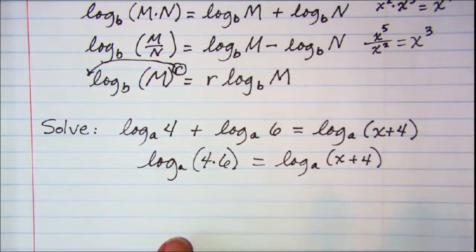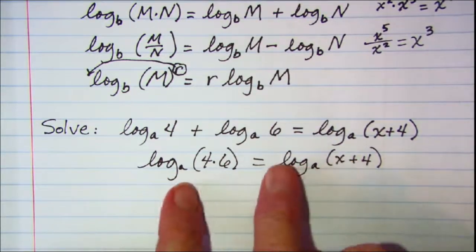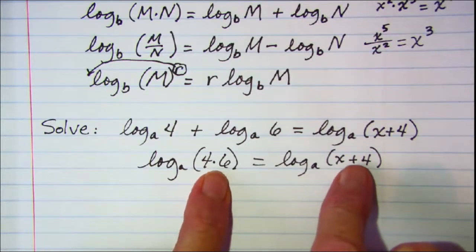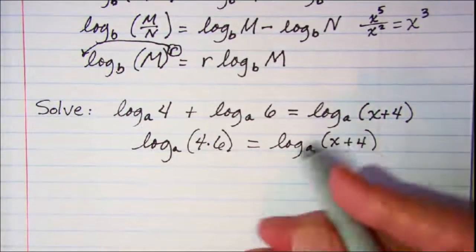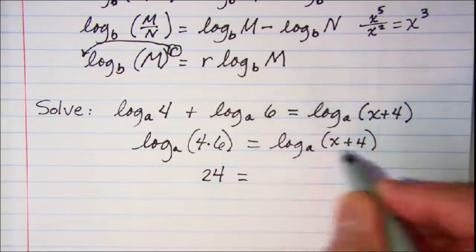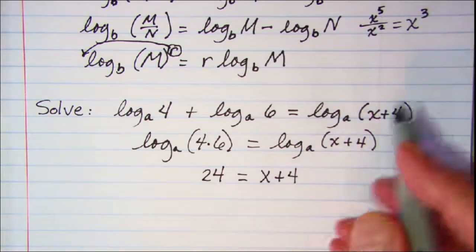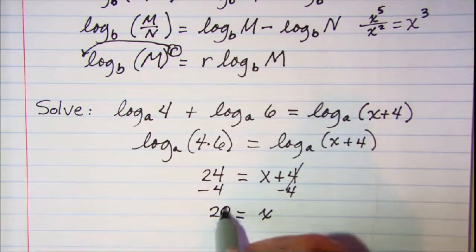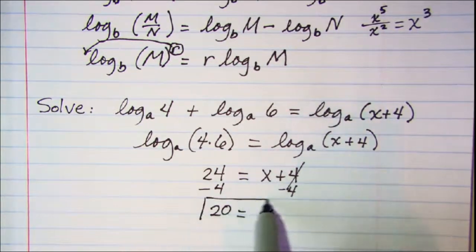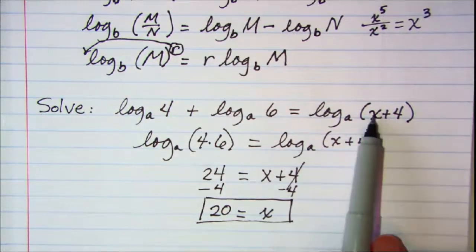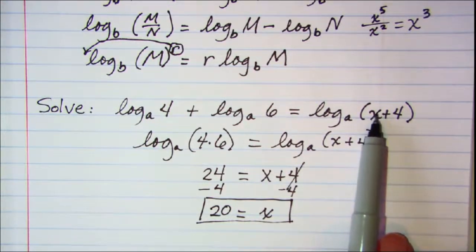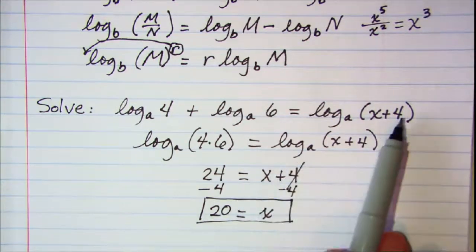Whenever you have an equation where both sides have the same log base — here both are base a — you can set the arguments equal to each other. So 4 times 6, which is 24, equals x plus 4. Subtract 4 from both sides and x is equal to 20. It's important to check that the argument won't be negative or zero; here 20 plus 4 is 24, which is positive, so we're good.